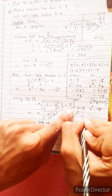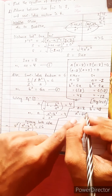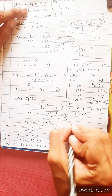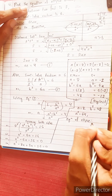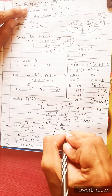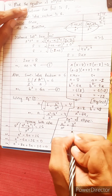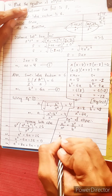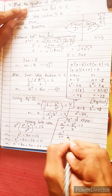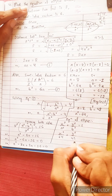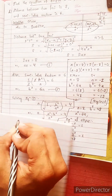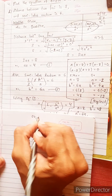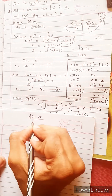Therefore b² = 6a = 6 × 8 = 48, and a² = 64. The equation of the ellipse is given by x²/a² + y²/b² = 1, which becomes x²/64 + y²/48 = 1.